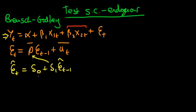We discussed the circumstances under which the t-test for delta1 is no longer valid. In particular, if there is a relationship between x in our regression equation and our error, we can no longer assume the zero conditional mean assumption holds. As a result, our estimates of delta1 in the auxiliary regression are going to be biased, and any statistics based on that — the t-statistic, the F-statistic — are all going to be biased. So we need to correct this auxiliary regression to account for this.